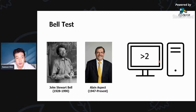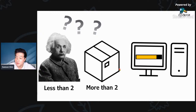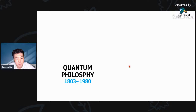Alain Aspect proposed using entangled photons and showed that if Einstein is correct, the correlation should be less than 2, and if quantum mechanics is correct, the correlation should be greater than 2. This was the moment of truth — what is the nature of reality? In 1982, Aspect conducted the experiment and the result was 2.697, which is much larger than 2. This surprised many people, and now we must accept this spooky reality from quantum mechanics.